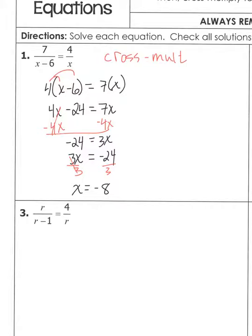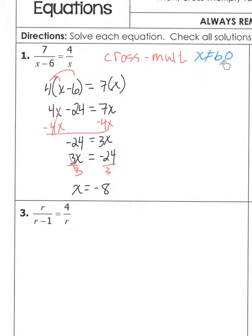You still have to look at restrictions — restrictions come from the denominator, which cannot equal zero. So our restrictions here are: x cannot equal six (set x minus six equal to zero and add six), and with a monomial the variable cannot equal zero. Since negative eight is not any of my restrictions, it's a good solution.